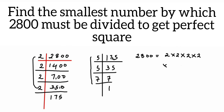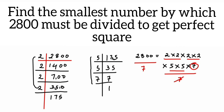We got a pair of 2s and a pair of 5s, but there is no pair for 7. A pair means a group of two identical factors. Since 7 is a single factor with no pair, we divide both sides by 7. On the right-hand side, the 7 cancels, and on the left-hand side 2800 ÷ 7 = 400.